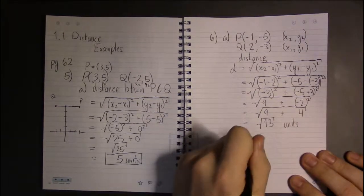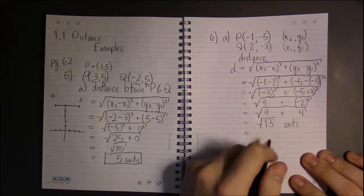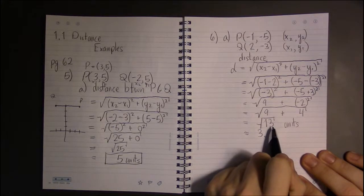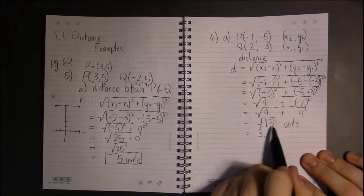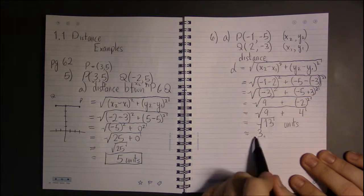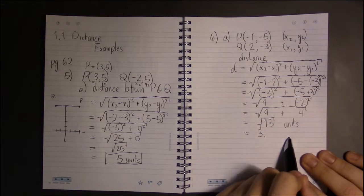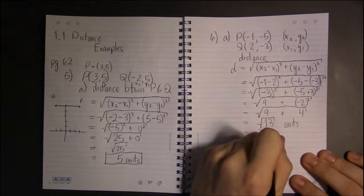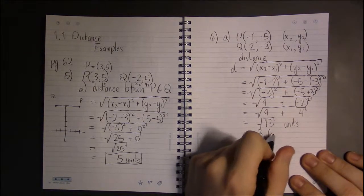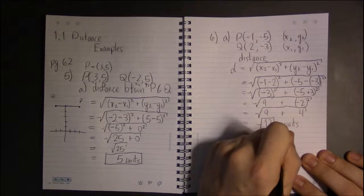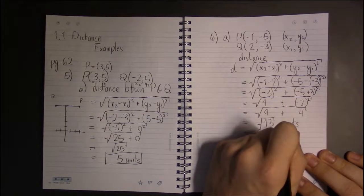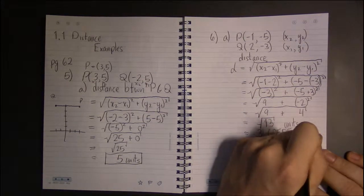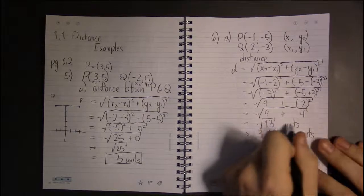Or if you prefer, you could write it out approximately. Square root of 13—13 is between 9 and 16, so square root of 13 is going to be between 3 and 4, square root of 9 and square root of 16. It's in fact 3.6055555. Either way.